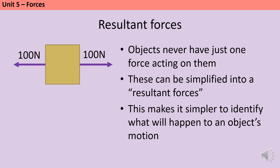Resultant just means overall, and this really isn't a tricky concept. Imagine that you're trying to push a box to the right with a force of 100 newtons, and at the same time your friend is trying to push it to the left with a force of 100 newtons. Those two forces balance each other out, and so actually the box doesn't move at all — it's as if nobody was pushing it in the first place. So we can say there's a resultant force of 0 newtons.